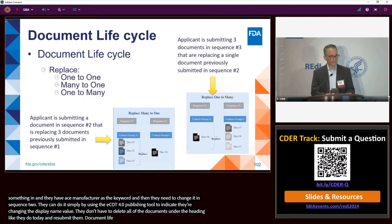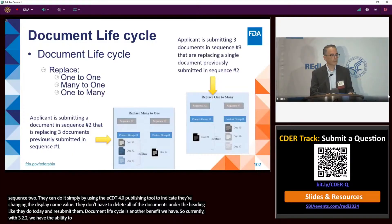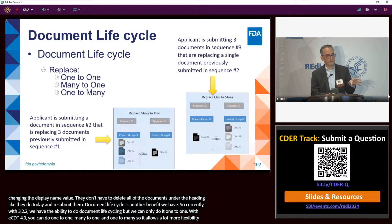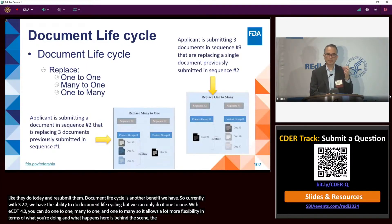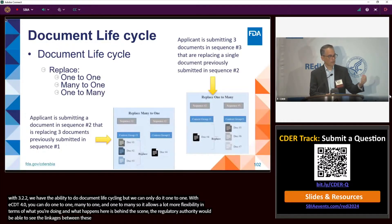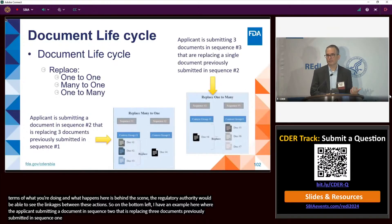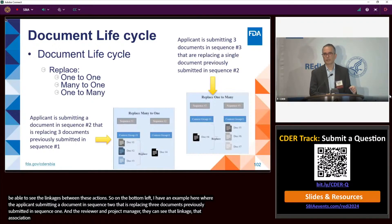Document lifecycle is another benefit. Currently with 3.2.2, document lifecycling is only one-to-one. With eCTD 4.0, you can do one-to-one, many-to-one, and one-to-many, adding a lot more flexibility. Behind the scenes, the regulatory authority will be able to see the linkages between these actions — for example, a document submitted in sequence two replacing three documents previously submitted in sequence one. The reviewer or regulatory project manager at FDA would see that association even without explicit mention in the document or cover letter.